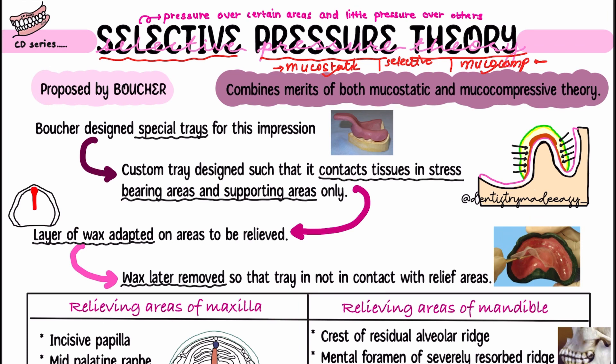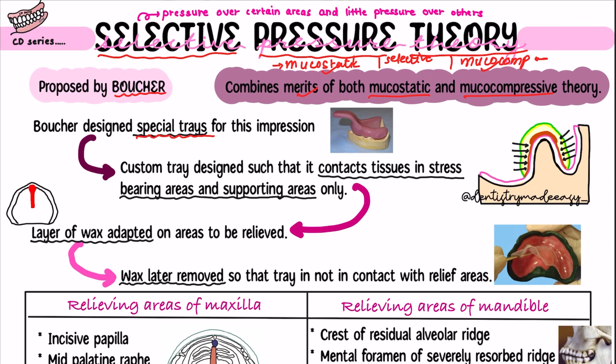This selective pressure theory combines the merits of both mucostatic and mucocompressive theory. It was proposed by Voucher. In this technique, a special or custom tray is used to record the impression. These custom trays are designed individually for each patient such that they contact the stress-bearing and support areas only. We will cover what stress-bearing and support areas are in the anatomical landmarks section later.